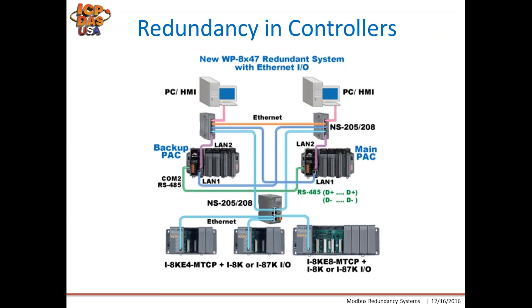This slide shows our WinPak 8047 series with redundant IO and Ethernet IO. At the top we have two PCs connected by an Ethernet switch to both WinPaks connected by Ethernet, and then connecting at the bottom to expansion IO racks. This provides several layers of redundancy: the top layer being the two PCs, the two Ethernet switches which provide redundant communication, and finally at the bottom where there are multiple connections to the same IO with the expansion racks.